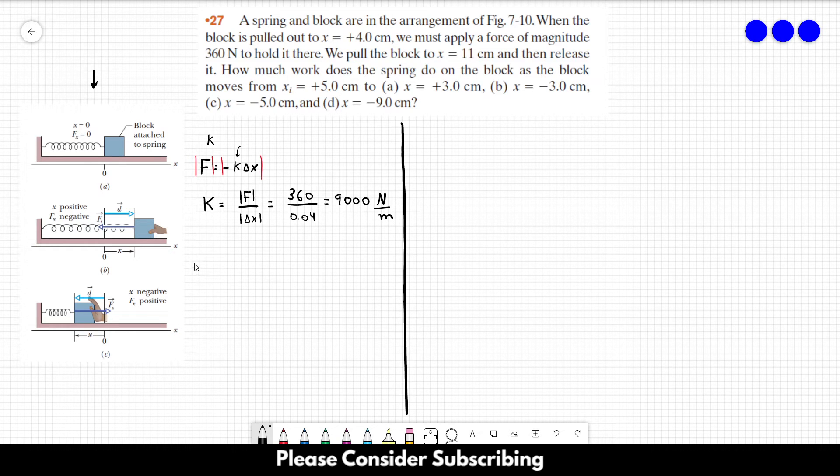Now we use the equation to calculate the work done by the spring, which is W = (1/2)k·x_i² - (1/2)k·x_f². So it's one-half times k times the initial position squared minus one-half times k times the final position squared.